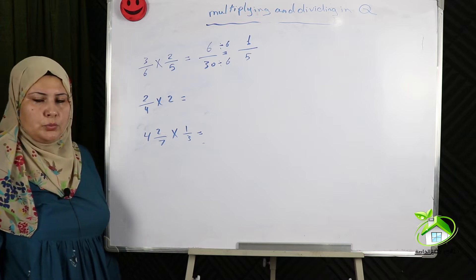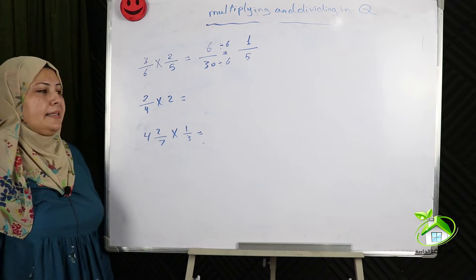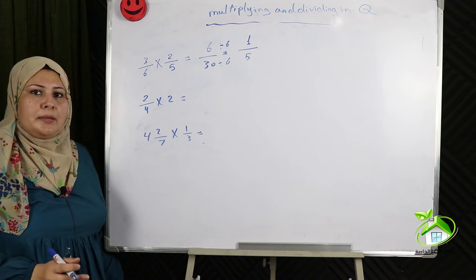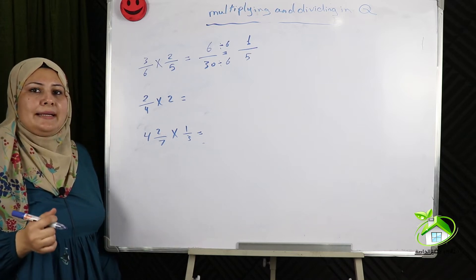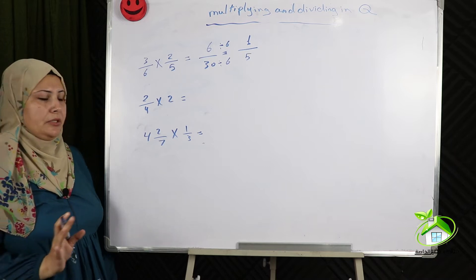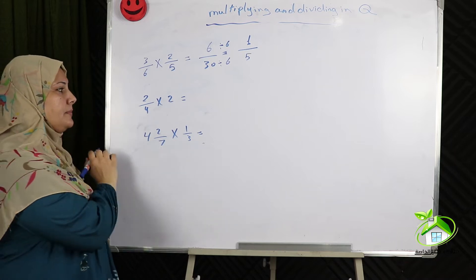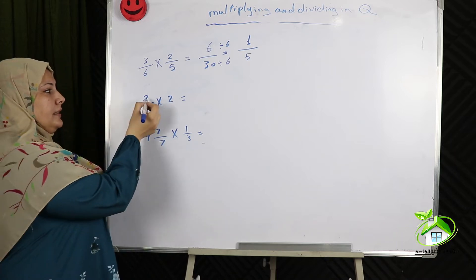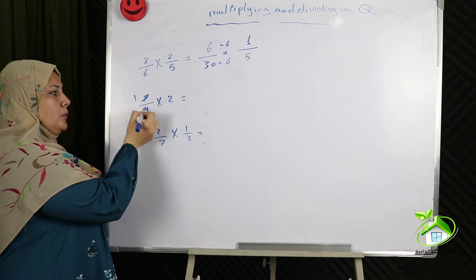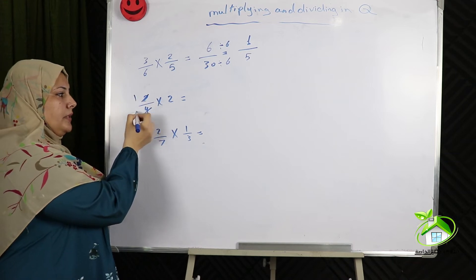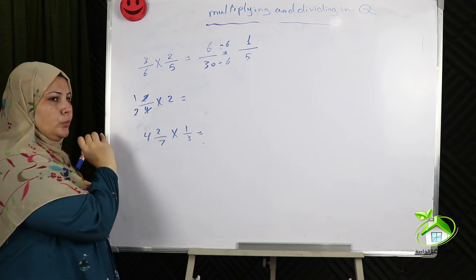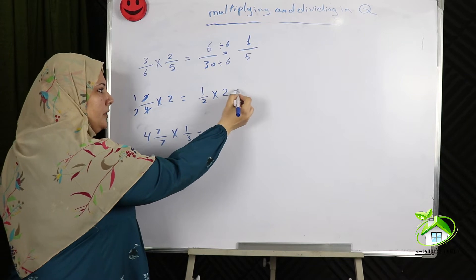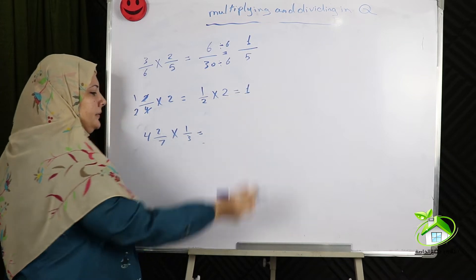Another example: 2 fourths times 2. It's better to simplify the rational number before carrying out the multiplication operation. So I will simplify 2 fourths: divided by 2 equals 1, divided by 2 equals 2. So one half times 2 equals 1.